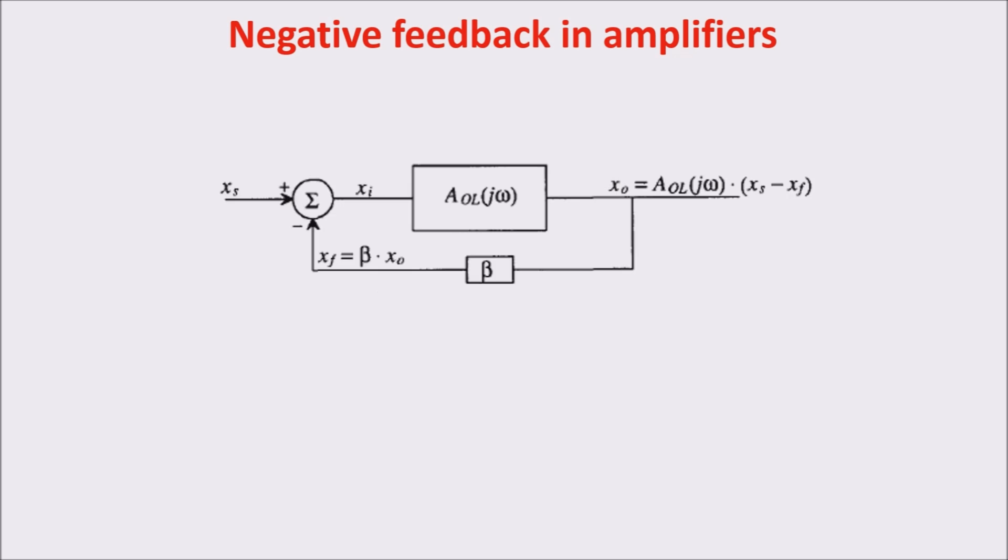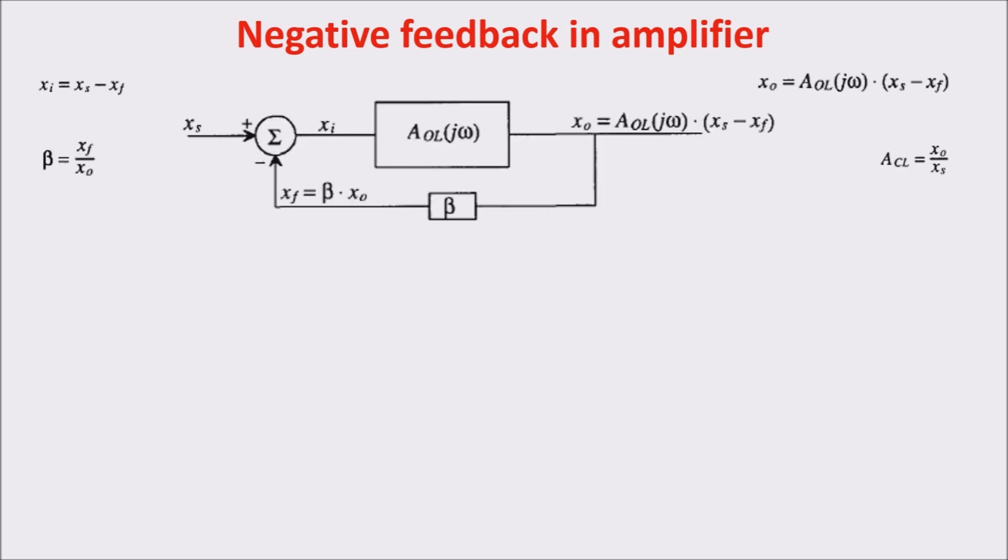As you see when we close the loop, the input of the amplifier Xi is the difference between the source input and the feedback signal. The output is the open loop gain times the input Xi. The feedback factor beta is defined as the signal feedback XF over the output signal XO, and the closed loop gain is defined as XO over the input source signal XS. Keeping in mind these definitions, we derive the closed loop gain as function of the open loop gain and the loop factor beta.